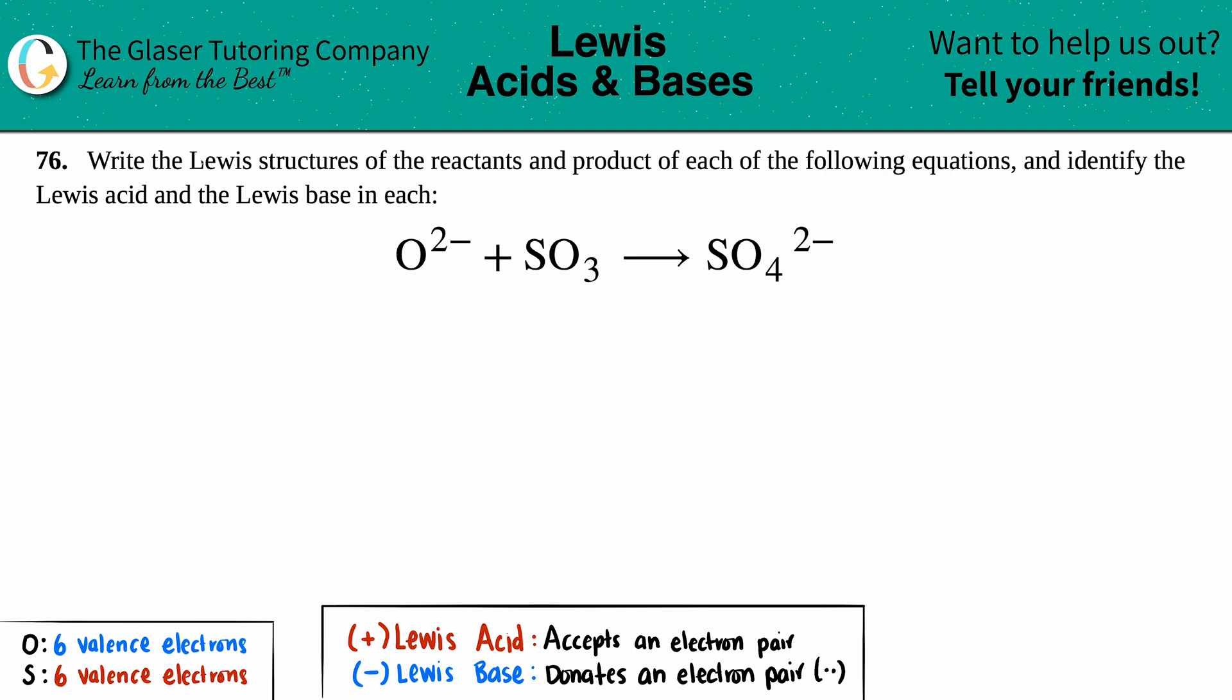Number 76: Write the Lewis structures of the reactants and product of each of the following equations and identify the Lewis acid and the Lewis base in each. Okay, so writing the actual Lewis structures are going to be a review. In Chem 1 on this channel, we did tons of questions figuring out how to actually write the Lewis structures. So if you need a more in-depth explanation as to why these Lewis structures are what they are, just go back to that chapter.